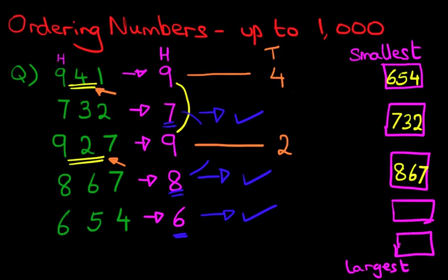Now, because these two numbers are different, we can work out which is smaller and which is larger. So, which is the smaller number? The smaller number is this one, two. So, therefore, we can write down this number which is nine hundred and twenty-seven. So, let's write this in the box, nine hundred and twenty-seven.